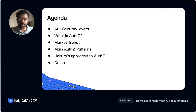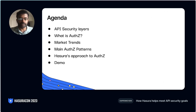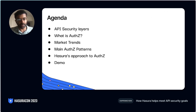We'll look at market trends and solutions in the community today which are widely being adopted for API security and authorization needs. We'll look at the patterns that these solutions enable. Then we'll deep dive into Hasura's approach to authorization, which we'll show to be very flexible and powerful. And finally, we'll do a small demo.